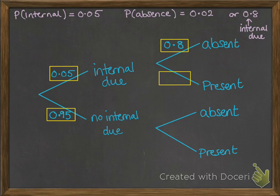Again, remembering that our probabilities have to add up to 1. He's either absent or he isn't, there's nowhere in between. So that one has to be 0.2 to make that add up to 1.